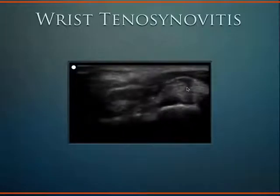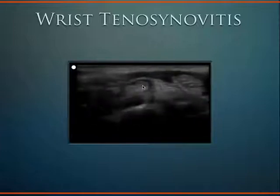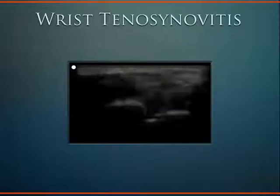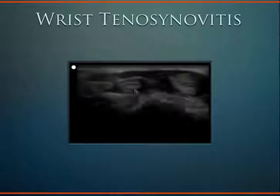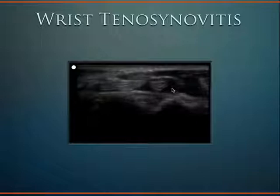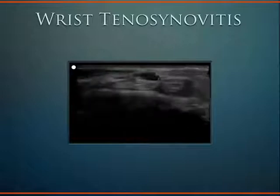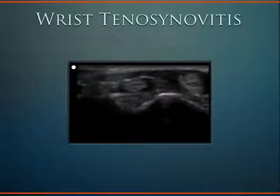Here's a patient with tenosynovitis of the wrist. This is the tendon, and between the tendon and tendon sheath we see some fluid. Seeing fluid like that confirms thickening of the tendon sheath and an effusion — confirming the diagnosis of tenosynovitis and differentiating it from cellulitis. We showed this image to our surgical colleagues and they took the patient for a washout of that tendon sheath.